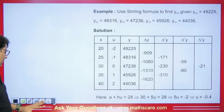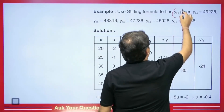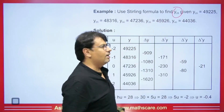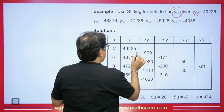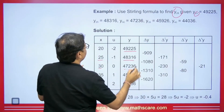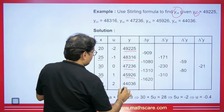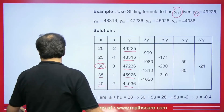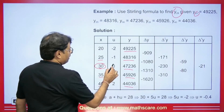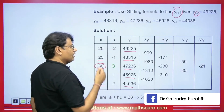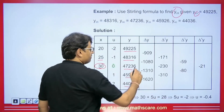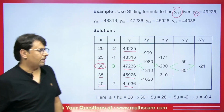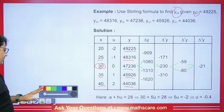Let's do some questions based on this. First question: use the Sterling formula and find y(28), where values are given at x = 20, 25, 30, 35, and 40 with respective y-values. We need to find the value at 28, so the nearest value is 30, which we take as 0. Then 25 is −1, 20 is −2, 35 is +1, and 40 is +2.